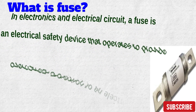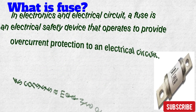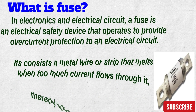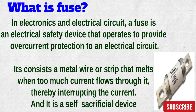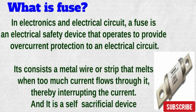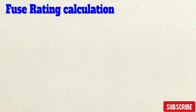What is a fuse? In electrical and electronic circuits, a fuse is an electrical safety device that operates to provide overcurrent protection. It basically consists of a metal wire or strip inside that melts when too much current flows through it, thereby interrupting the current in the circuit. It is a self-sacrificial device — once a fuse has operated, meaning it has blown out, the circuit will be open and the fuse must be replaced or rewired.